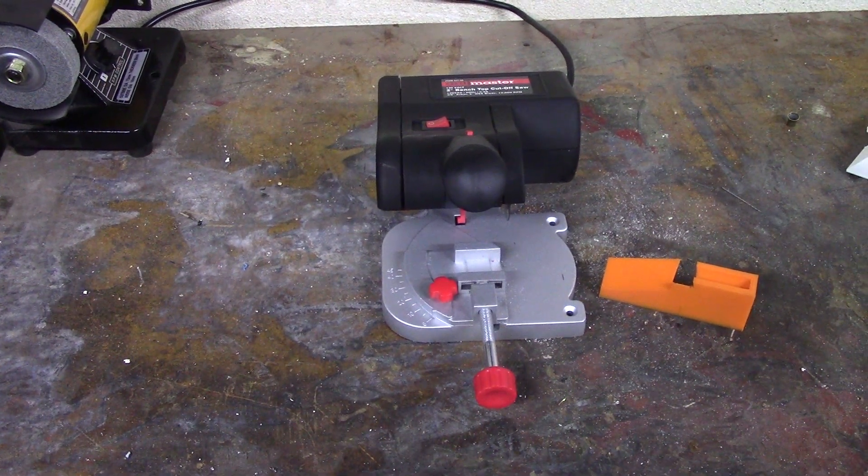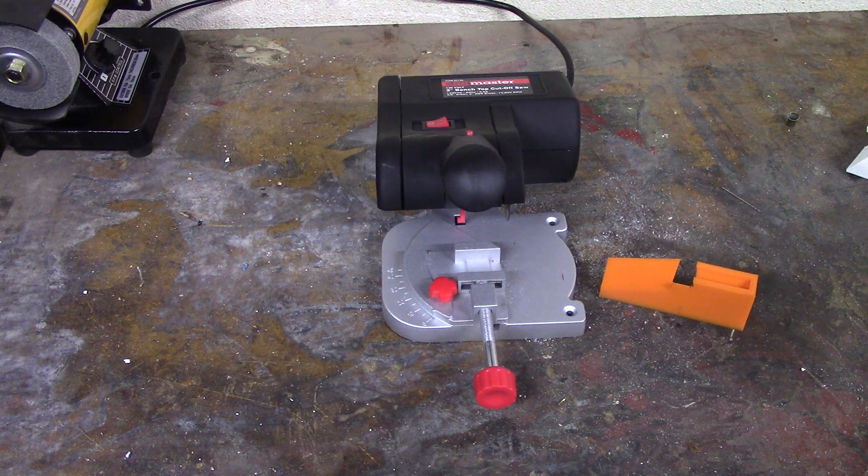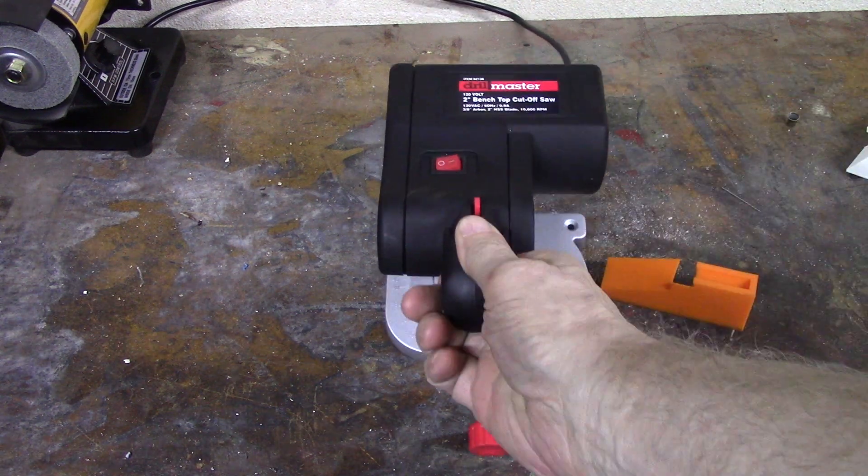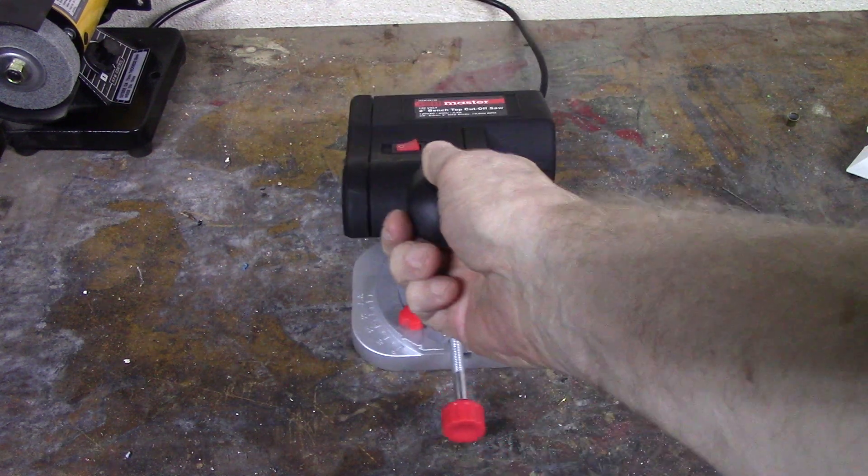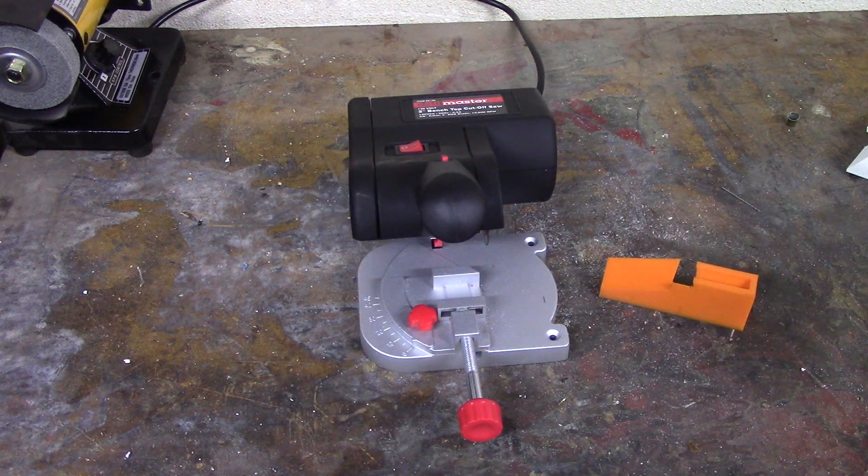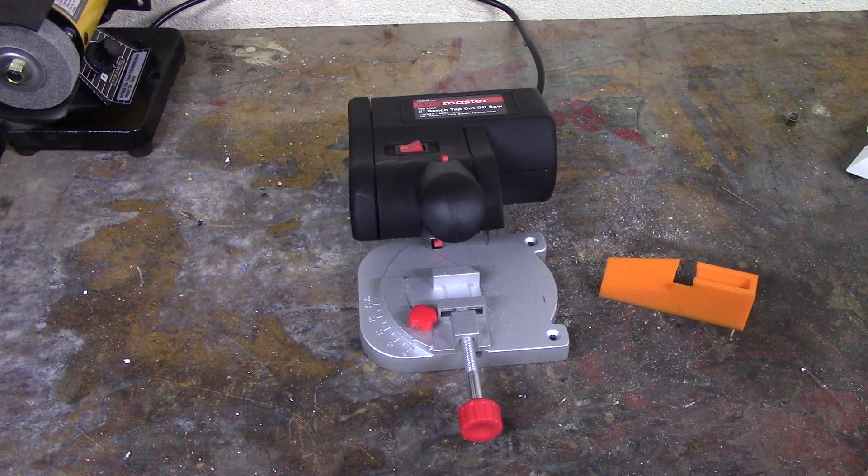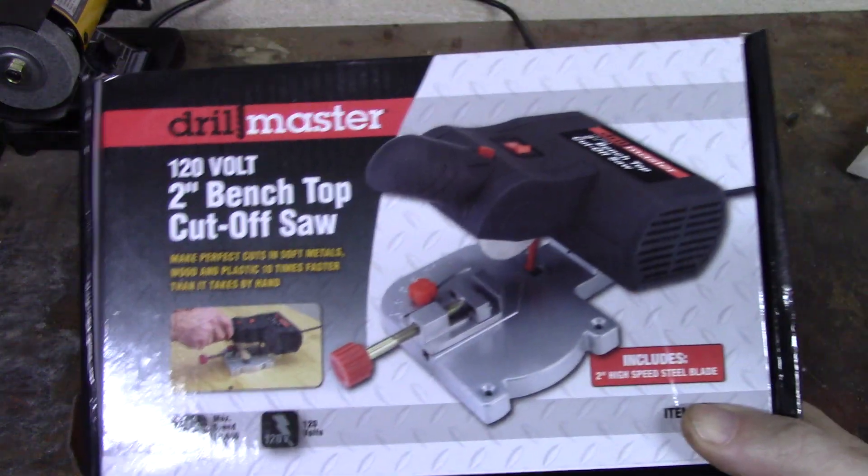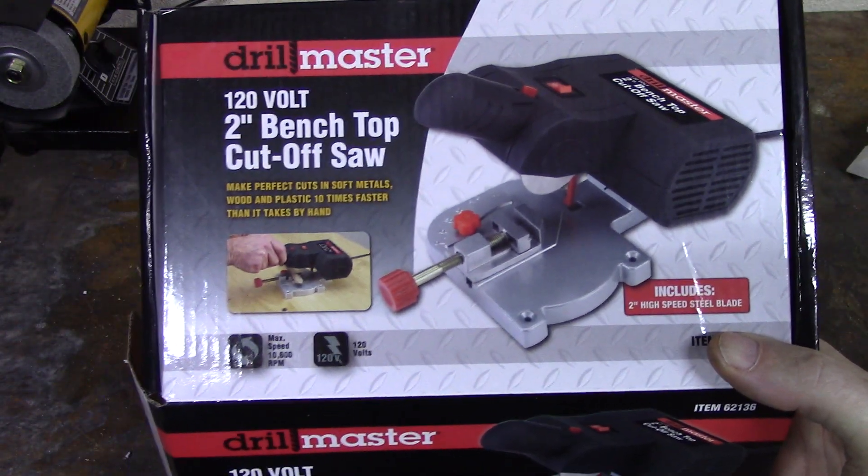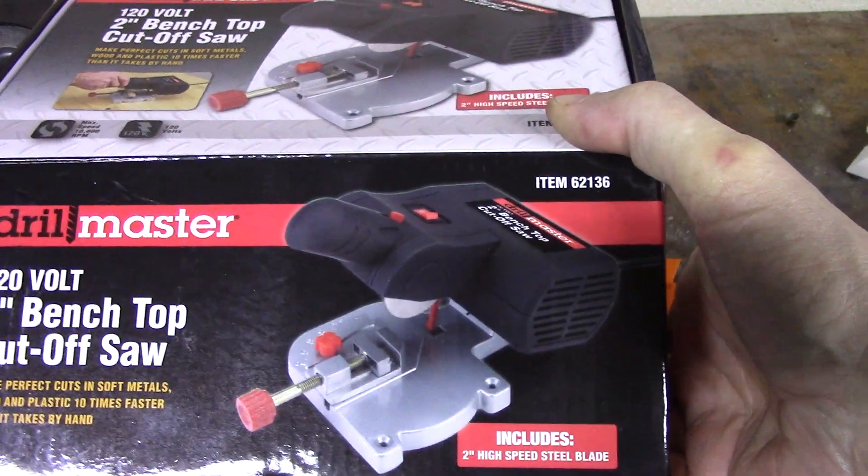Hey everybody, welcome back. In last week's video, link in the cards above, I did a quick test and review of the Harbor Freight Drill Master two-inch bench top cutoff saw. That is the saw with the very thin steel tooth blade. For those who want a better reference, here is the box and the item number is right there in the upper right hand corner.